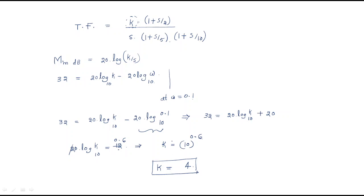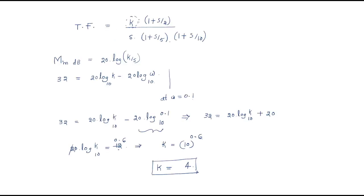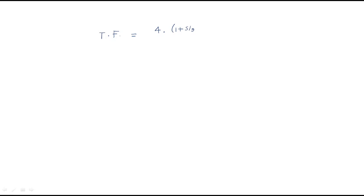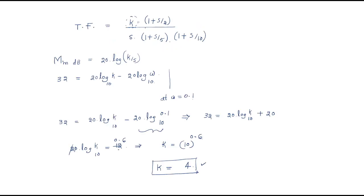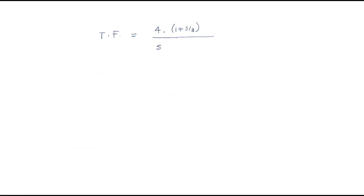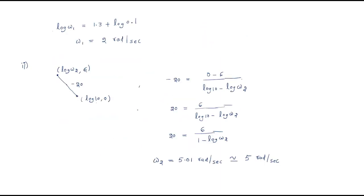So k = 4. The final transfer function is: G(s) = 4(1 + s/2) / [s × (1 + s/5) × (1 + s/10)].